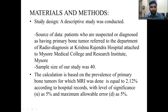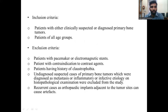Materials and methods. The study design is a descriptive type of study. The source of data was patients who were suspected or diagnosed of having primary bone tumors referred to the Department of Radiodiagnosis, KR Hospital, Mysore. The sample size was 40, based on a prevalence of primary bone tumors of 2.12% according to hospital records, with a level of significance of 5% and maximum allowable error of 5%.